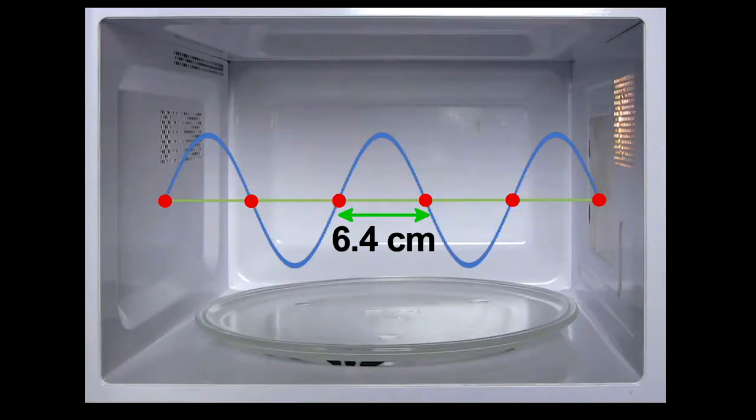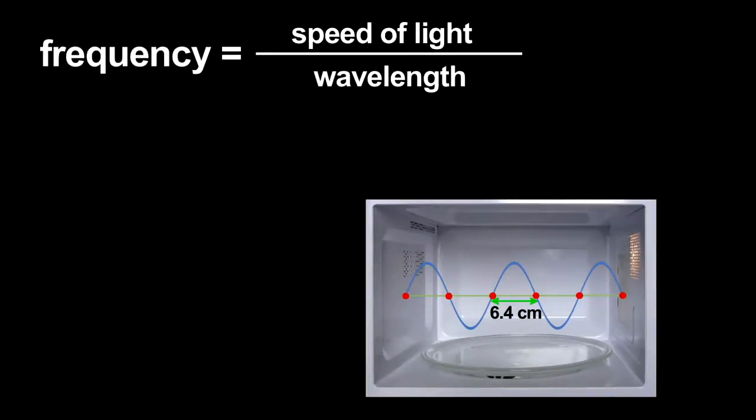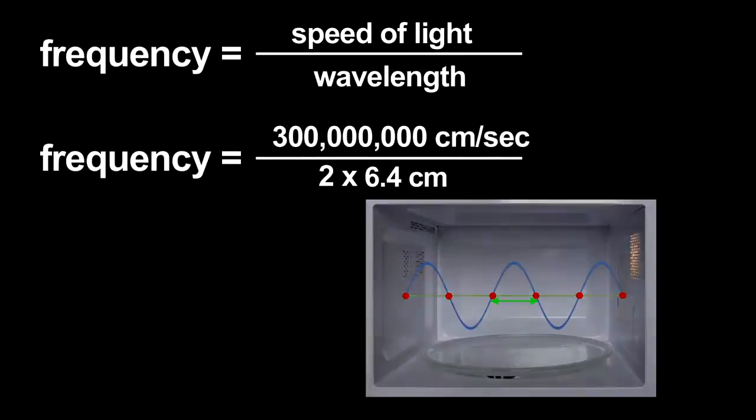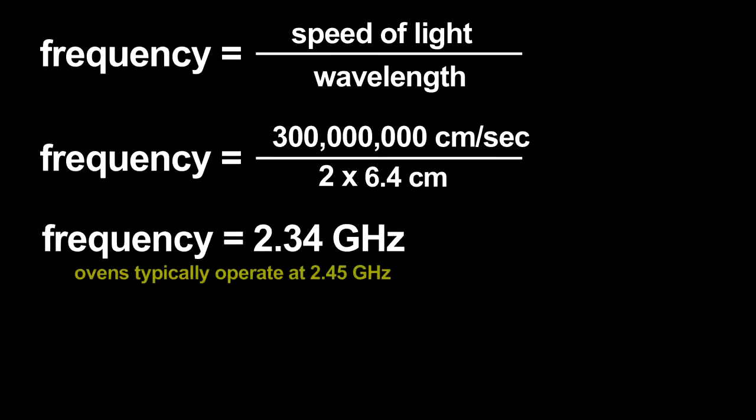Using that wavelength, I can estimate the microwave radiation's frequency. The frequency is related to the wavelength by the speed of light. I get an answer that only has a 4 or 5 percent error. Not bad for this primitive measurement.